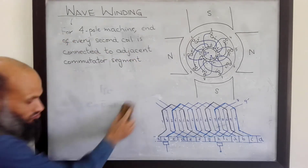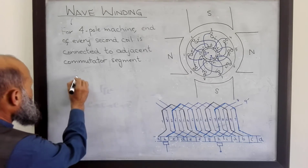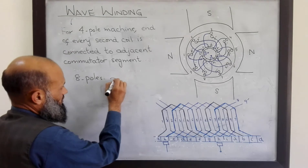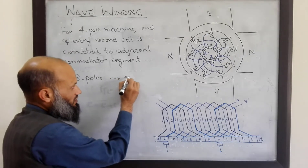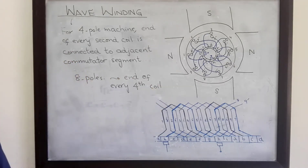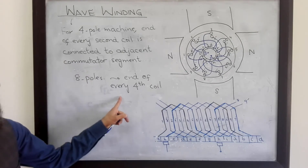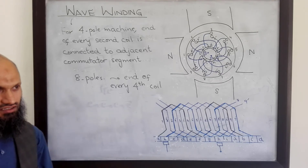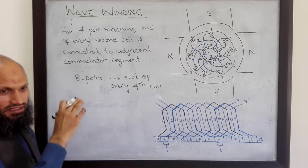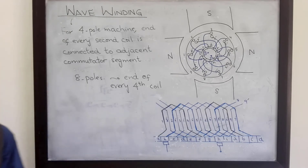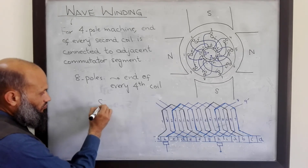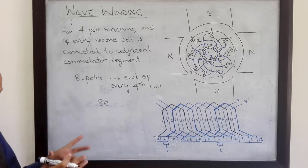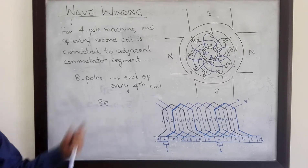This was the situation for a machine with four poles. What will be the situation for a machine with, for example, eight poles? For the case of eight poles, the end of every fourth coil will be connected to adjacent commutator segments. That is, between two commutator segments there will be eight conductors — one will be under each pole — and hence the total voltage will be the sum of all these voltages. Some of them will be smaller, some slightly larger; however, their net sum will be 8E.